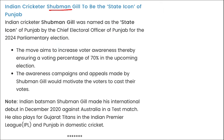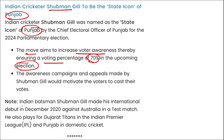Indian cricketer Shubman Gill will be the state icon of Punjab. This is to promote youth awareness and increase voter awareness, aiming for a 70 percent vote percentage in the upcoming elections. Shubman Gill made his international debut in December 2020.